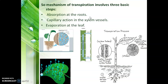The mechanism of transpiration involves mainly three steps: first, absorption of water by the roots; second, water rises through the xylem due to cohesion and adhesive forces; and third, water circulates into the atmosphere through mesophyll cells and stomatal cells. So the three steps are: absorption by roots, water travels through the xylem, and water evaporates through stomata in the leaves.